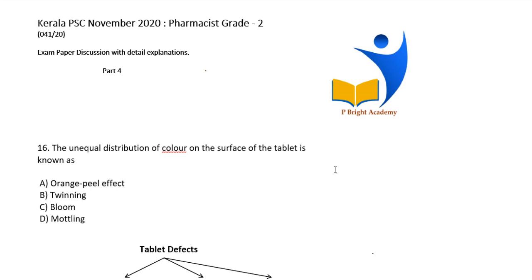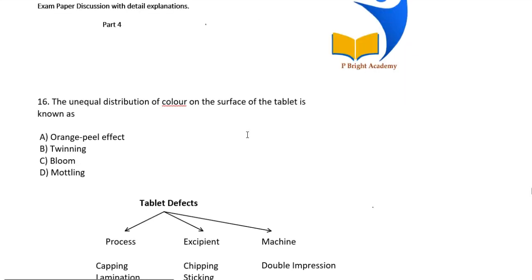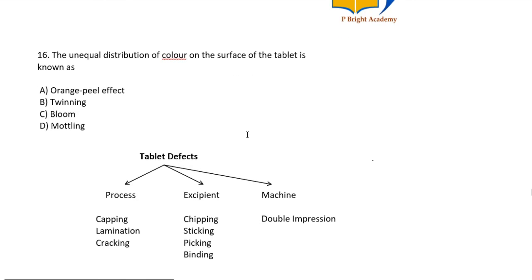The unequal distribution of color on the surface of the tablet is known as - options are orange peel effect, twinning, bloom, or mottling. The right answer is mottling.